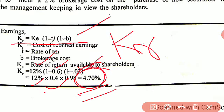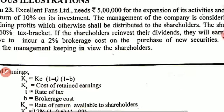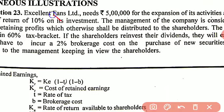So 4.7% is the rate of return that a shareholder can actually earn if they make an investment outside by using the dividend — after paying tax and brokerage on that dividend. The company, by contrast, will be able to earn 10% on the investment.